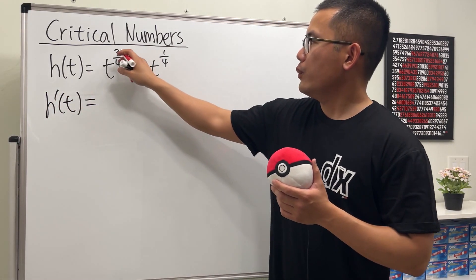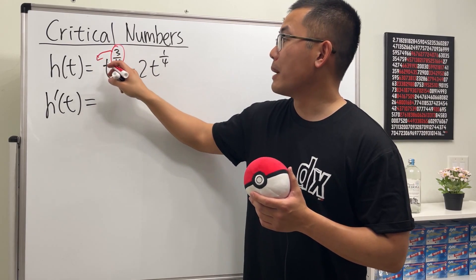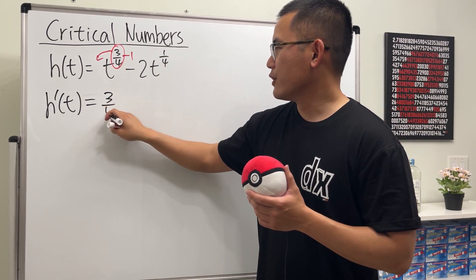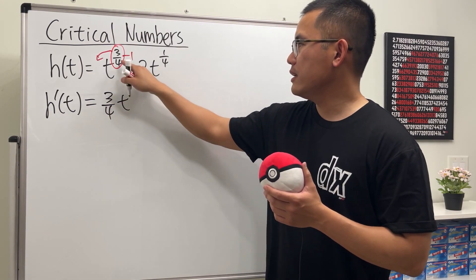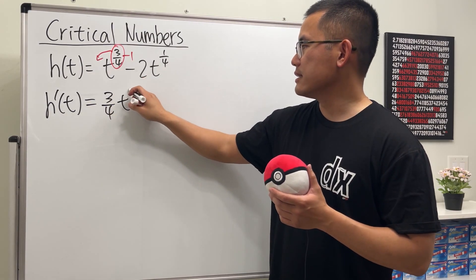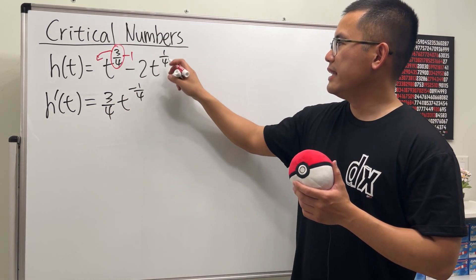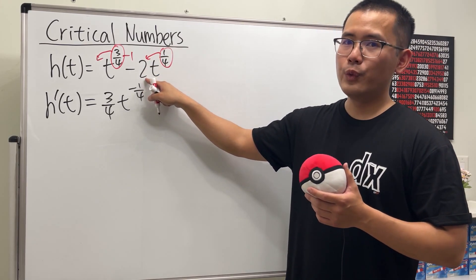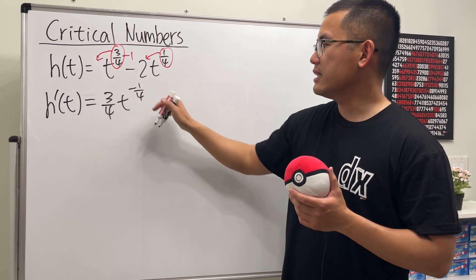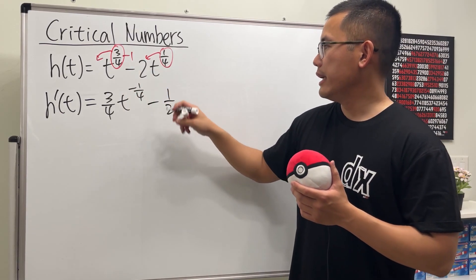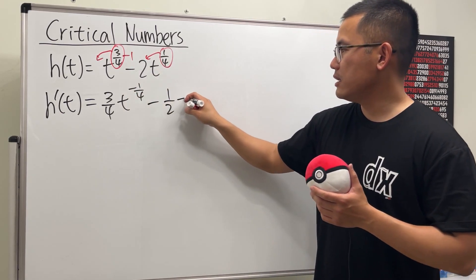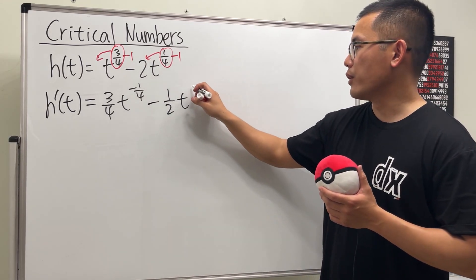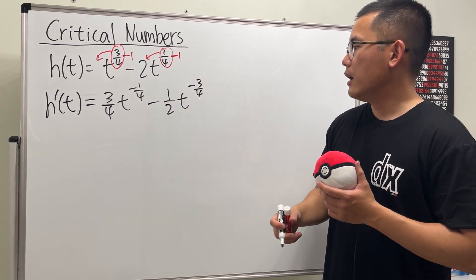For h prime of t, we are going to use the power rule — bring the power to the front and then subtract one. So first: three over four times t to the negative one over four. Then bring the one over four to the front, multiply with two to get one half, and that's negative, giving us t to the negative three over four.